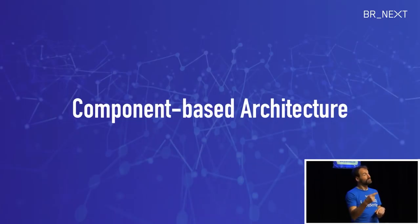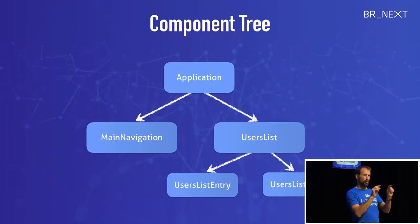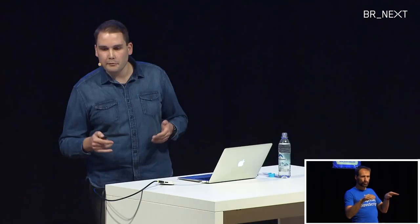The main difference between AngularJS and Angular 2 is that we have a component-based architecture. That means we write applications with the help of components, and we have some sort of component tree in our application. Every application has a root component and multiple child components. In this example, I have an application root component, and then maybe we have a main navigation and a user list with some user list entry components underneath. That's basically a tree of components.